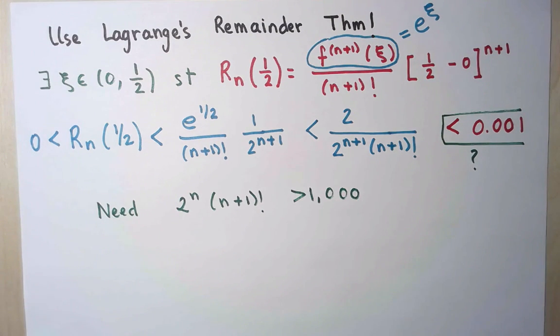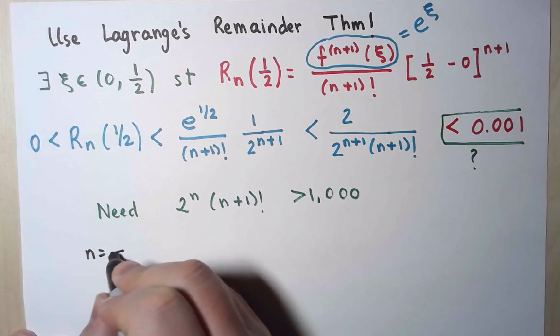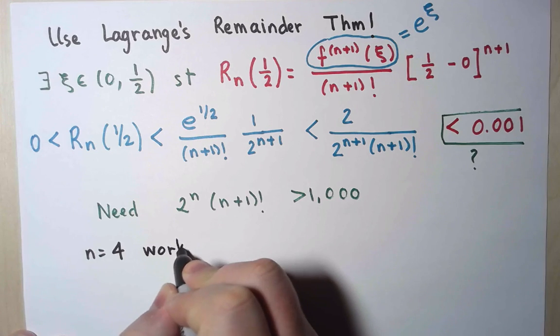Pick any n that will satisfy that. And factorials grow really quickly, so this is going to be possible with some small value of n. So just try values of n, starting with 1, 2, 3, and I believe that eventually you will notice that n equals 4 works.